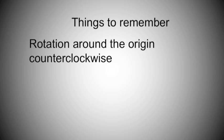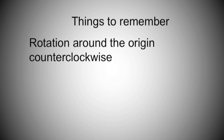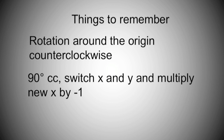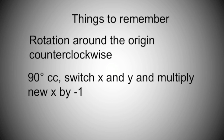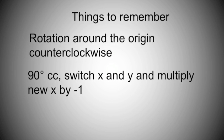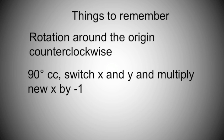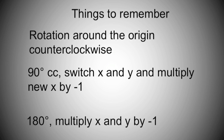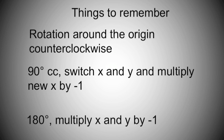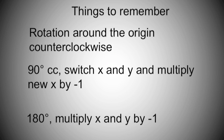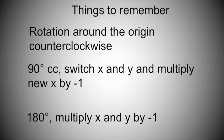A few things to remember: Rotation around the origin is always counterclockwise. To rotate 90 degrees counterclockwise, switch x and y and multiply the new x by negative 1. When rotating 180 degrees, multiply both x and y by negative 1, but do not switch the coordinates — they stay in the same positions.